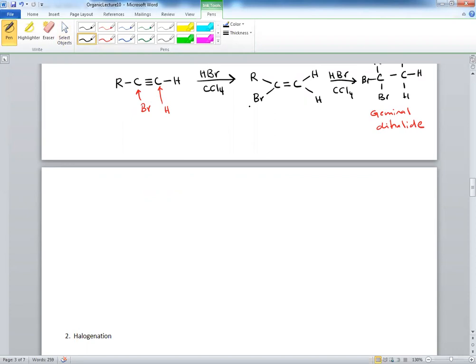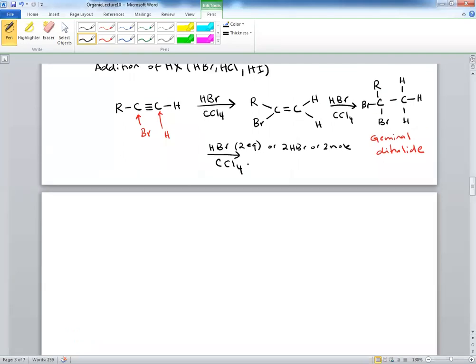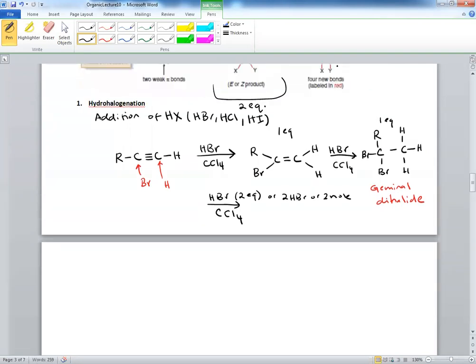This entire reaction can be written as HBr two equivalence, or it could be written as two HBr, or two moles, molar, etc. You are aware that that's speaking about the concentration. If that is the case, then you have to go all the way to the fully substituted product. If it's given only one equivalence, then you would stop right here. This is one equivalence, and this is the last equivalence. If you have two equivalence, you stop at the end.